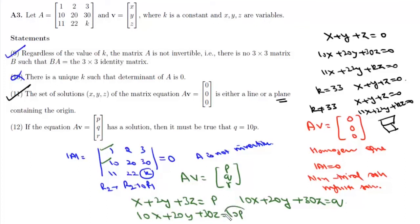The system of equations will be consistent if 10p equals q. So to get a solution, q must equal 10p, which means statement 12 is correct. Therefore, statements 9, 11, and 12 are correct, and statement 10 is incorrect.